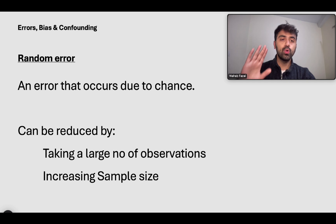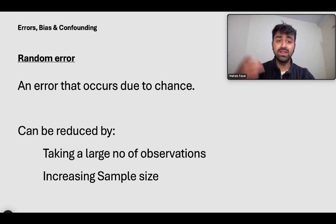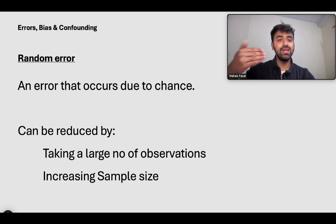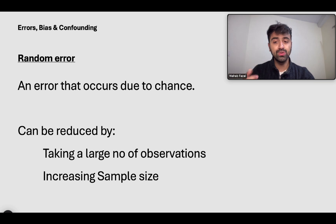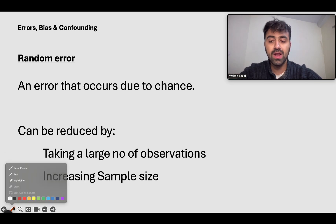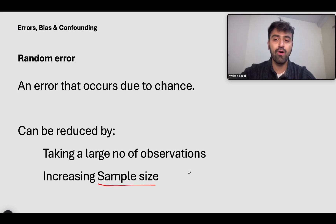For example, if you manually calculate the race time of participants — if there is a race and you're standing at the finish line trying to calculate the race time — there will certainly be some amount of error in that time. So what do you do? You make three or four or five people stand there with stopwatches, and that reduces the amount of random error because you just take their average. You take a large number of observations and increase your sample size, and that will reduce the random error of your data.